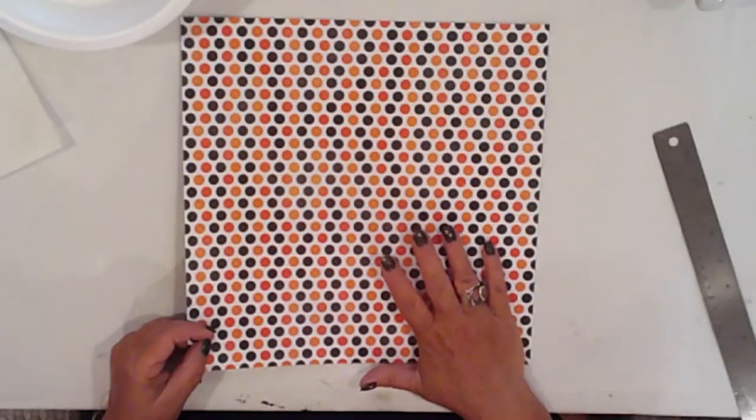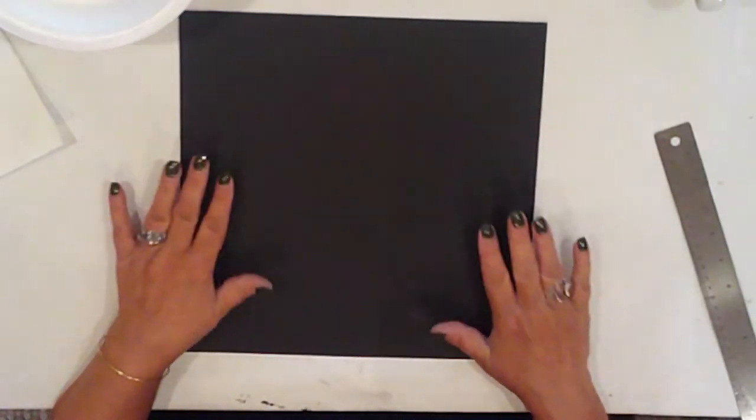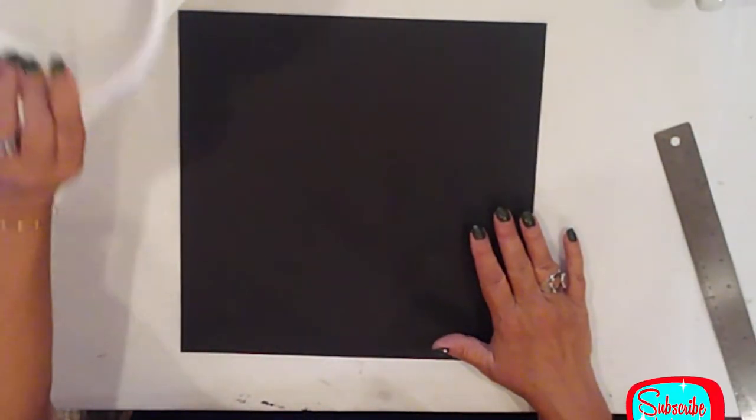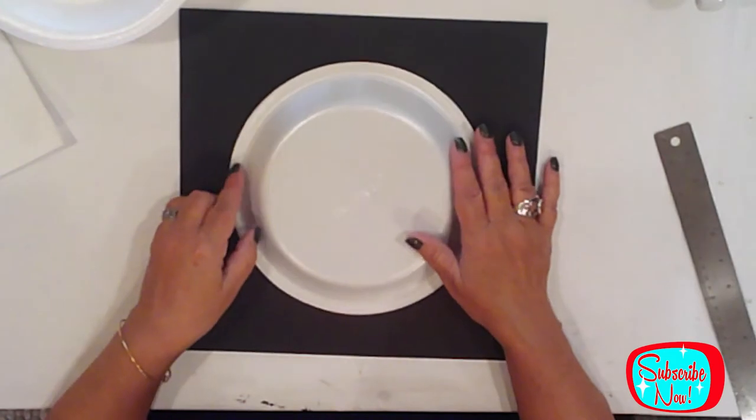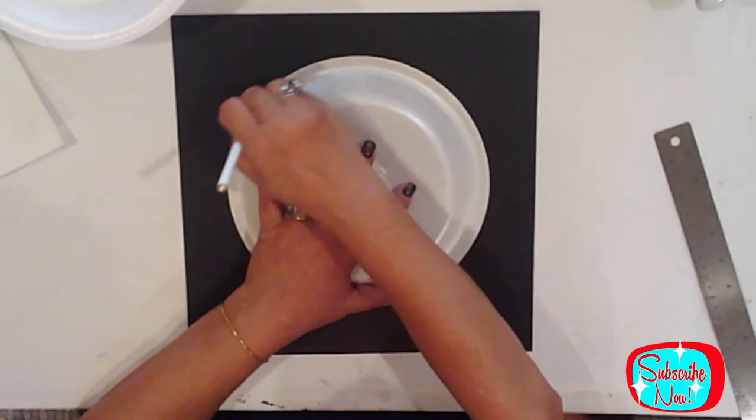I just match up the edges and then I'll use my brayer to really adhere them together. Now that my paper is well stuck together, I'll trace a circle onto the cardstock side using a paper plate. The paper plate is about an inch and a half larger than my box top.